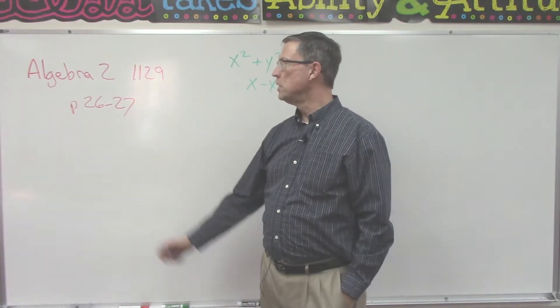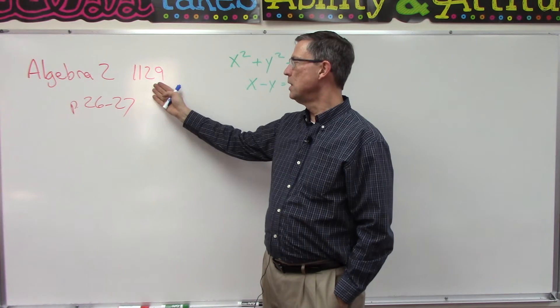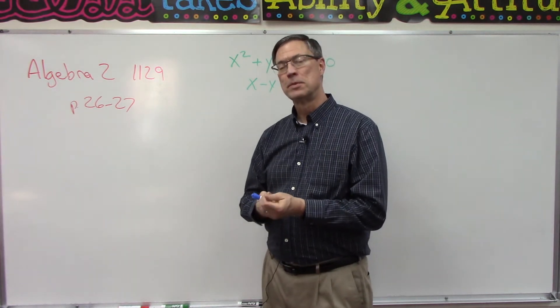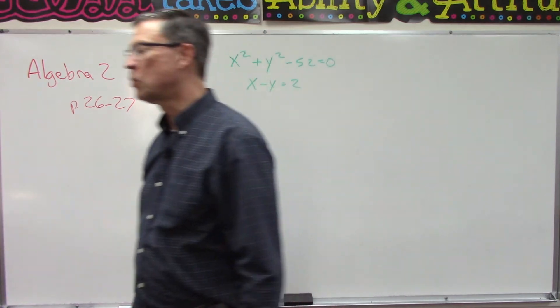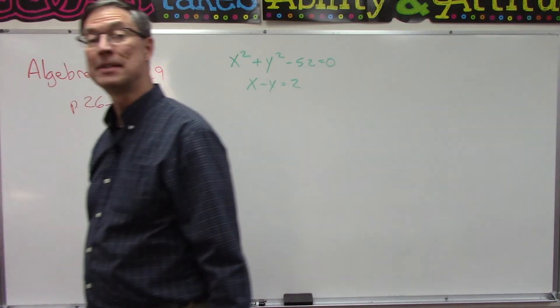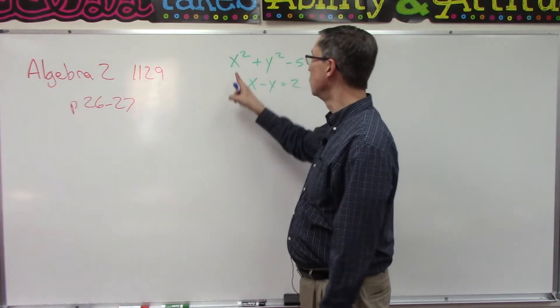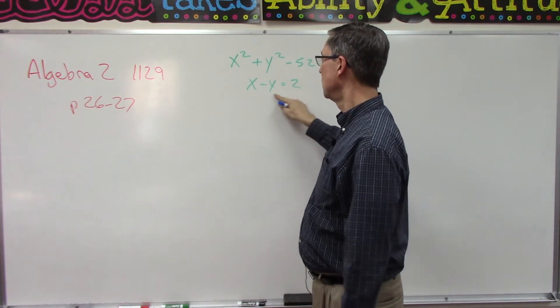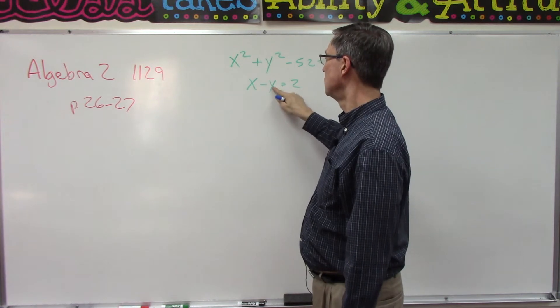Alright, two more lessons and we're done with page 1129. Let's take a look at page 26 and 27. This is a special case of solving quadratic systems. Quadratic means we have an x squared or y squared term, and then we have a linear equation. So we don't have squared terms—this would actually be the equation of a line.